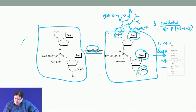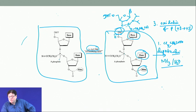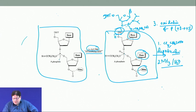The deprotection uses two conditions: first, chloroacetic acid (Cl2CHCO2H) to remove the DMT group; second, aqueous ammonia (NH3/H2O), which cleaves everything else — it is a basic condition that removes the benzoyl protecting groups from the bases.